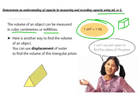Here's the way to find the volume of an object, especially if it's an object that we can't measure very well. We can use the displacement or the movement of water to find the volume of the triangular prism.